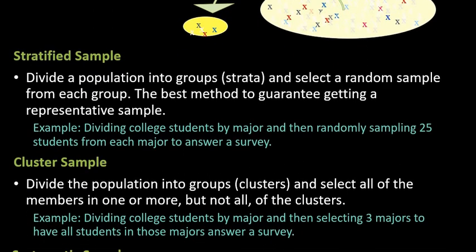All right, so moving on into more specific sampling methods. The next one that we're going to talk about is a stratified sample. So a stratified sample, you're going to divide your population into groups that are called strata, and then you're going to randomly sample from each group. Okay, for me, I believe that this is the best method to guarantee getting a representative sample.